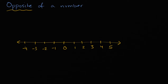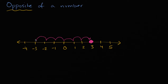So let's pick one of these numbers. Let's say we pick the number three. What is going to be the opposite of the number three? Well, the opposite of a number is a number that's the same distance from zero, but on the other side. So three is three to the right of zero — one, two, three — so its opposite is going to be three to the left of zero — one, two, three. The opposite of three is negative three.